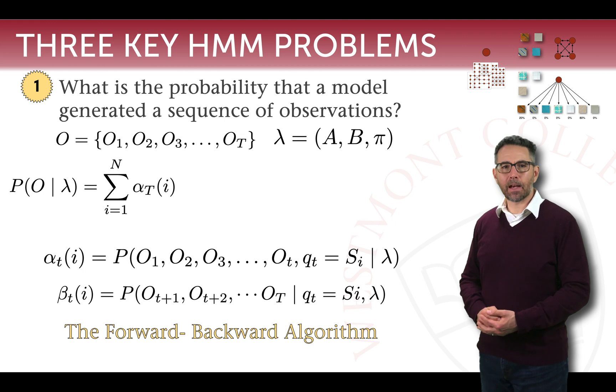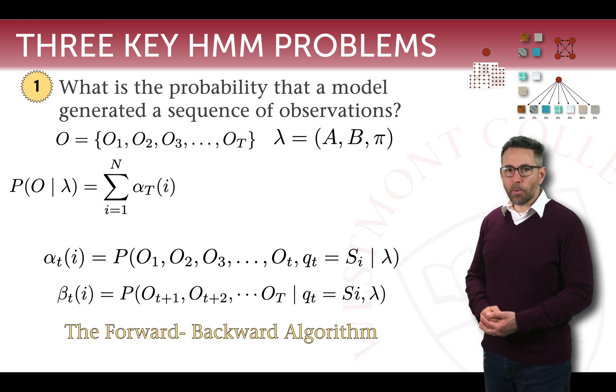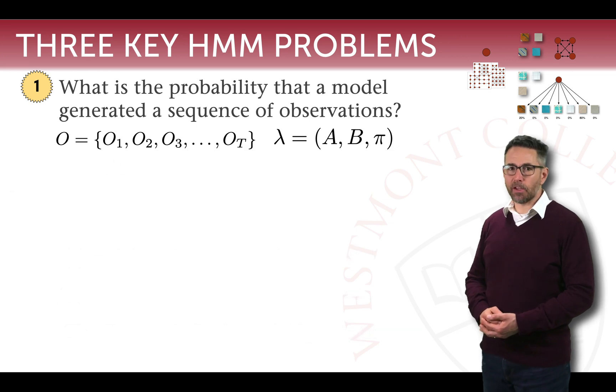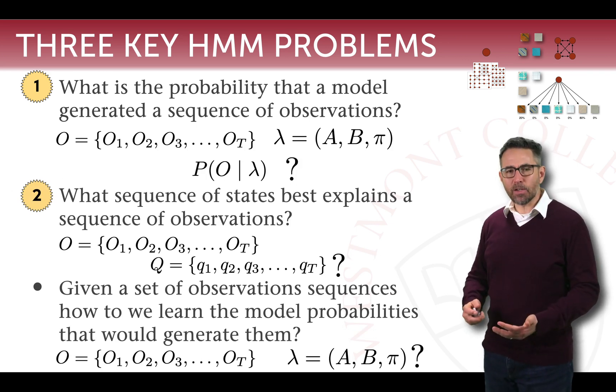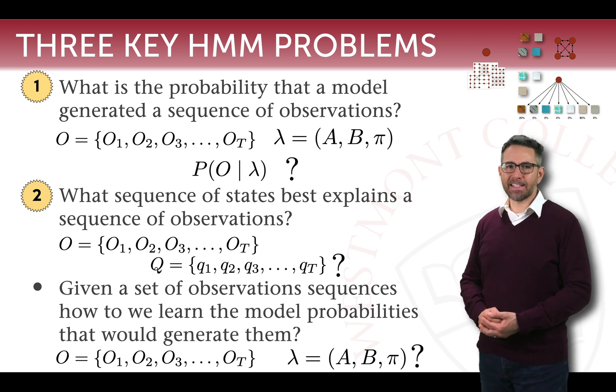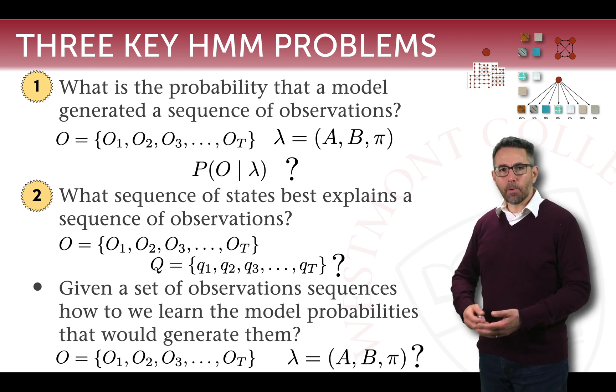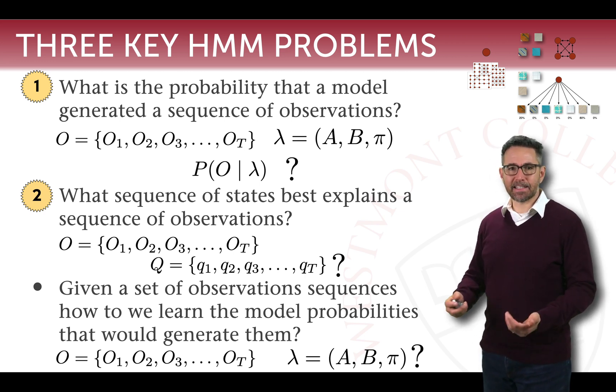Today we're interested in the second key question that you can ask about hidden Markov models: what sequence of states best explains a sequence of observations? This is really a very common question asked about hidden Markov models because the nature of the observations is that you can observe them, but what you're interested in is the states that generated them.